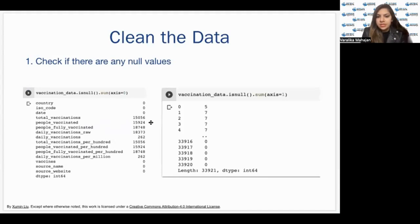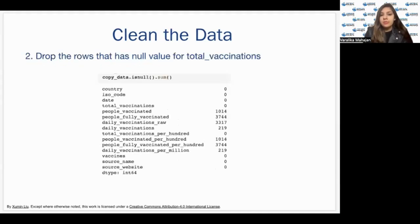Vaccination_data.isnull().sum axis equals zero gives us how many values of total vaccinations are none, how many people vaccinations are null, and so on. It tells how many values in a column are null. Whereas when we set vaccination_data.isnull().sum axis equal to one, it tells us about the row. In one row, how many column values are missing. It gives us the number of rows which have missing column values.